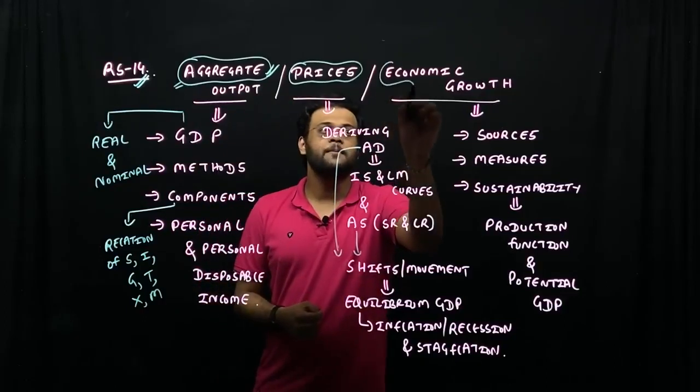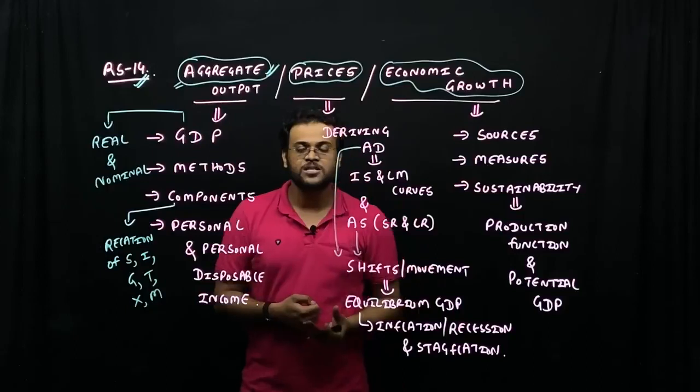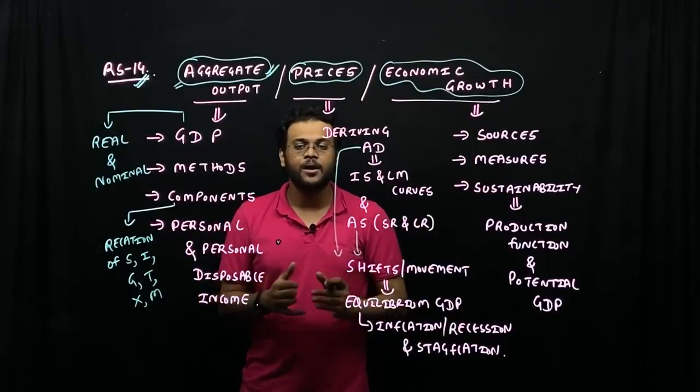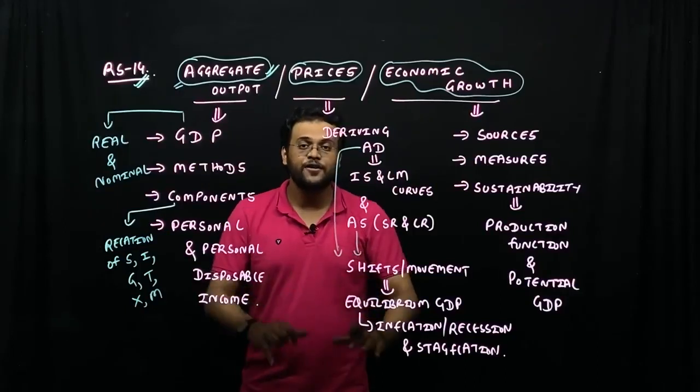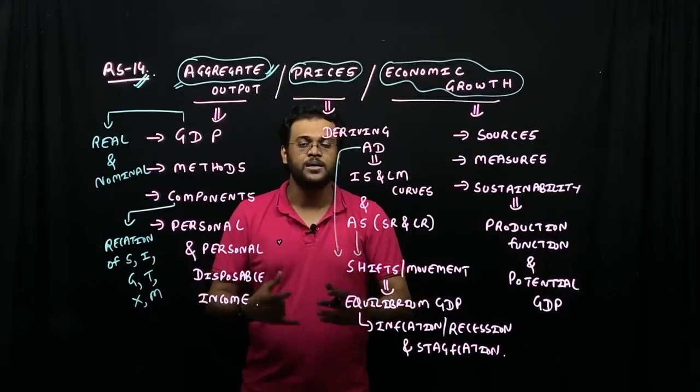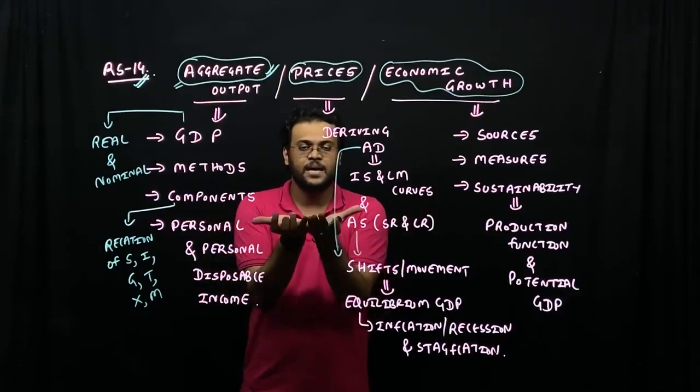And if GDP increases, then the economic growth is positive or negative depending upon whether the aggregate output is increasing or falling. So everything that we are going to talk from here will be macroeconomics. Reading session number 14 is the base.